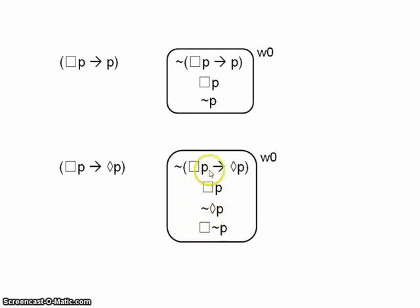You'd only have a contradiction if you had necessarily p and not necessarily p. But we don't have contradictions here, so this tree is still open, and it's complete. So this argument is invalid.